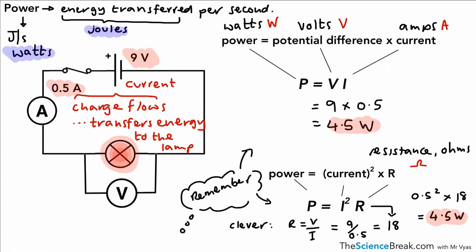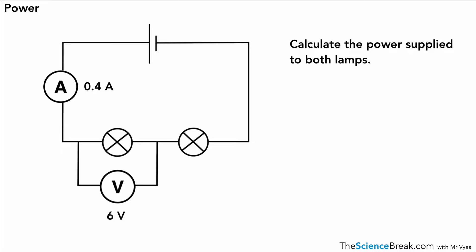Okay, so that's one example of how we might use the equation. Let's apply it to another one over here. This question says, calculate the power supplied to both lamps. Okay, we have to assume that those lamps are identical for this example. So it's P equals VI. But we do need to do a little something with our voltage, our potential difference. We're looking at the power to both lamps. We have to add 6 and 6. That's the voltage on both lamps.